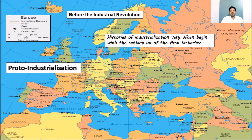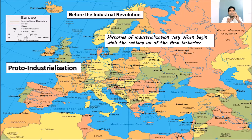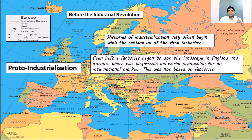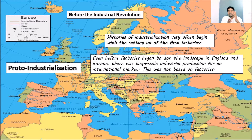Historians of industrialization very often begin with the setting up of the first factories. The industrialization process began by the setting up of factories. But even before factories began to dot the landscape in England — as you can see on the map of Europe — there was already large-scale industrial production for an international market, and this was not based on factories.